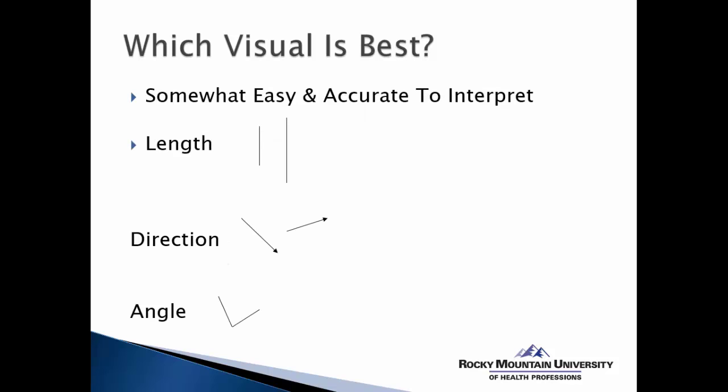The next level of ease and accuracy involves interpreting the length, direction, or angle of different chart types. Length — like the height of a bar graph — is pretty good for interpretation. Direction, as in a line graph showing a direction of change, is a little less accurate and easy to interpret. Then comes angle, which is very common in pie charts or donut graphs where we have to interpret the relative size of a chunk relative to others — and we don't often have an easy time accurately interpreting those sorts of things.